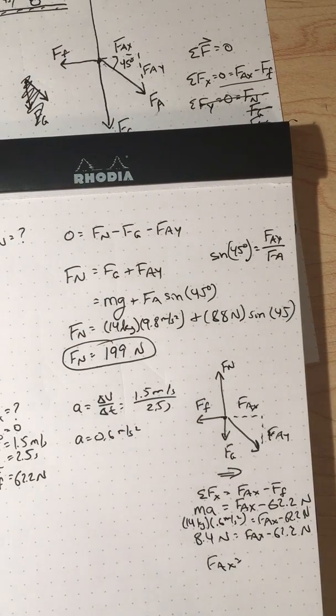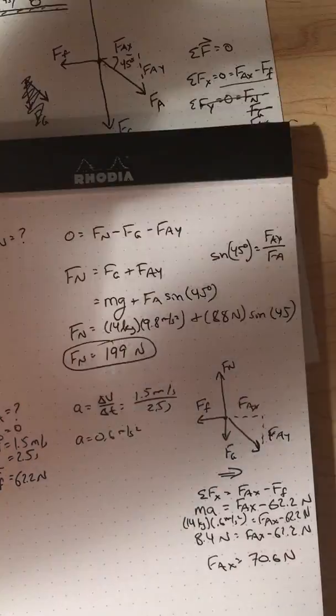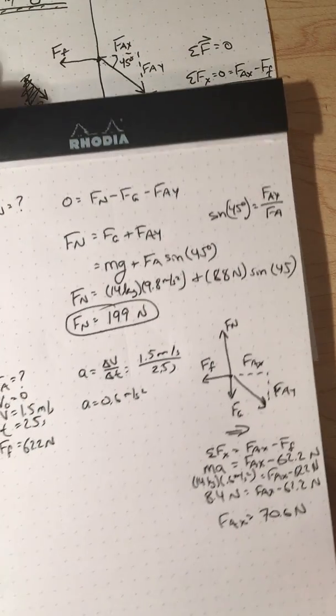Okay, 70.6. So that's my new F_AX. Now, if we're really being careful, that's not what it was asking.